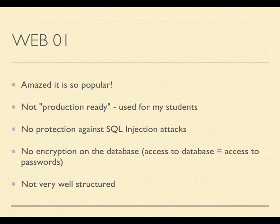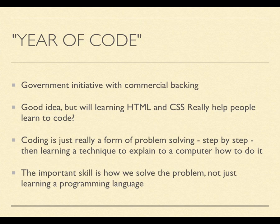Another major problem is there's no encryption on the database. Encryption is a way of hiding information such that even if someone got access to it they wouldn't be able to do anything with it — like a secret code. If anyone had access to the database in your login systems created from Web01, they'll have access to the passwords as well, so obviously that needs to be changed. It's also not very well structured if you want to extend the project to do other things. So I thought I'd start to address these, because at the moment we're coming up to what they've called the Year of Code.